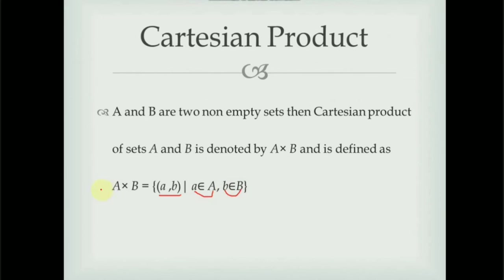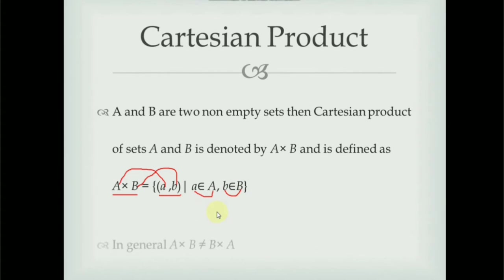The first element of the ordered pair belongs to the first set of the Cartesian product and the second element belongs to the second set. Here, the order of elements is important — the first element must belong to the first set and the second element must belong to the second set. That's why in general A cross B is not equal to B cross A.